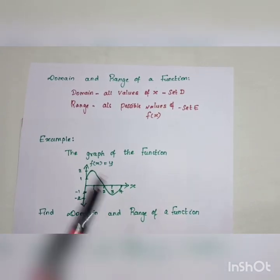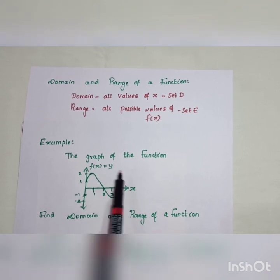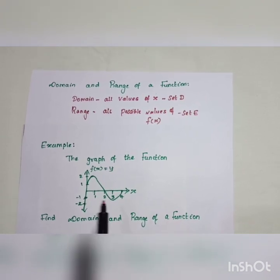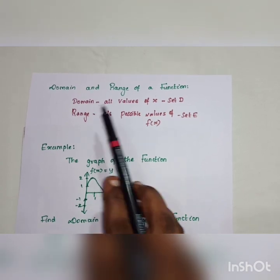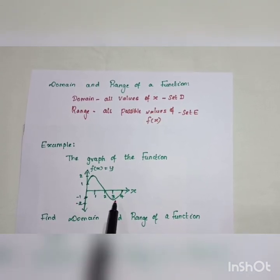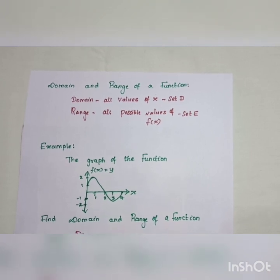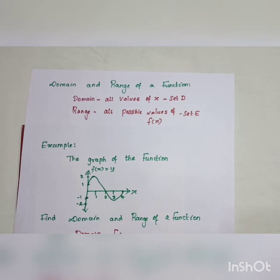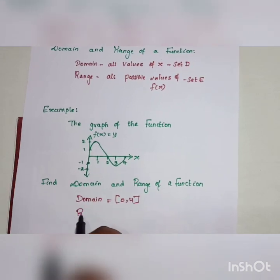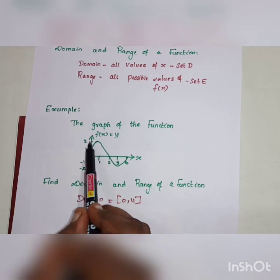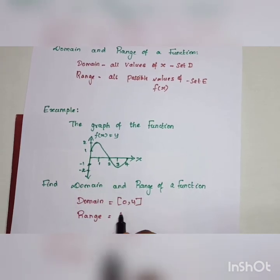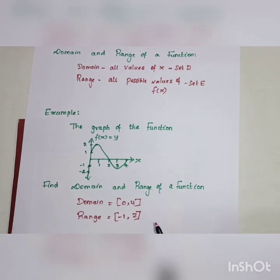We can understand domain and range from a function's graph. In this graph, x ranges from 0 to 4, so the domain is equal to [0, 4]. The y values (f(x)) go from -1 to 2, so the range is equal to [-1, 2].